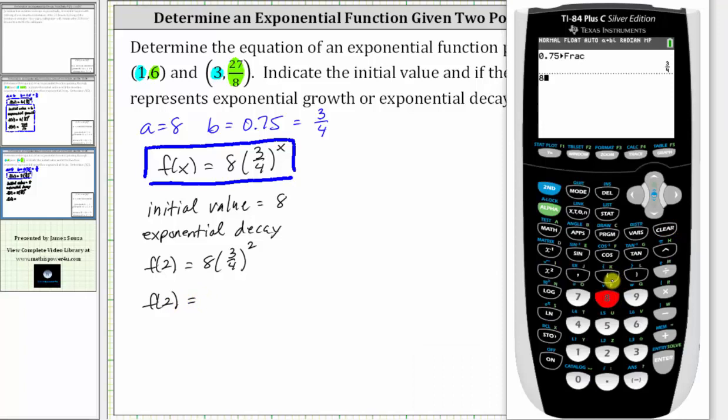We enter eight times three divided by four or 3/4. To enter the exponent of two, we can use the squared key here, or the exponent key here, and then two. Let's just use the squared key, enter.